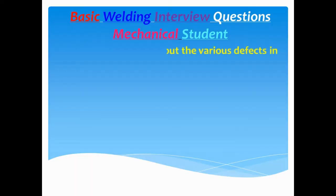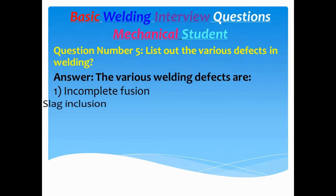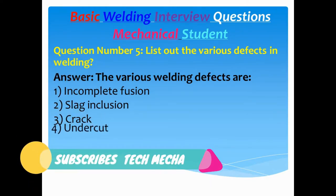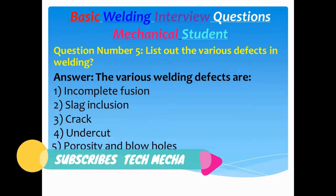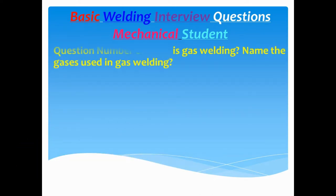Question number five: List out the various defects in welding. Answer: The various welding defects are: 1. Incomplete fusion, 2. Slag inclusion, 3. Crack, 4. Undercut, 5. Porosity and blow holes.